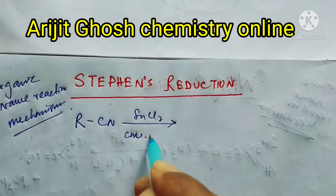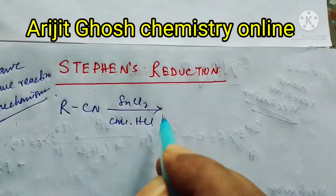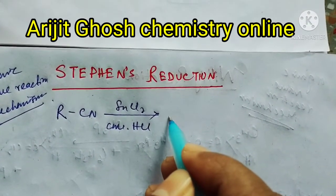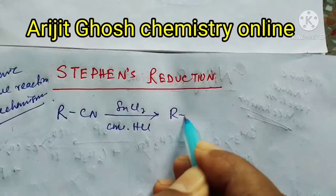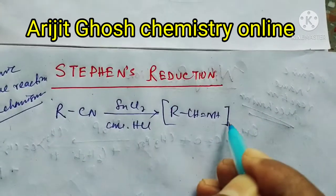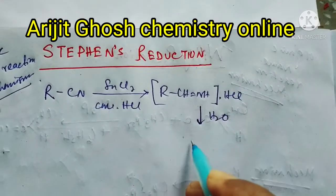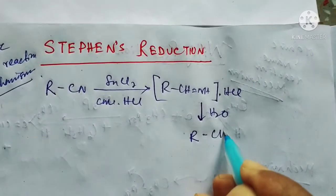and concentrated hydrochloric acid, they first produce an imine compound as intermediate. This is the intermediate imine compound, and then after hydrolysis they produce aldehydes.